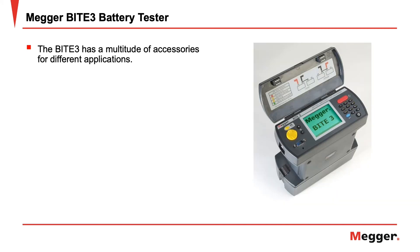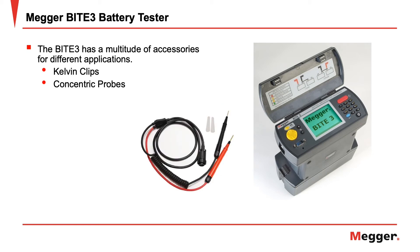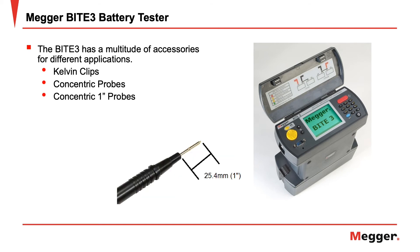The Byte 3 also has a multitude of accessories for different applications. Kelvin clips allow for simple hands-free testing, ideal for battery strings with terminals that can be easily clipped to. Concentric probes allow for testing of batteries on strings that have protective battery caps — there's no need to remove the caps, simply access the batteries through the access hole. The 25.4 millimeter or one-inch concentric probe allows for measurements of batteries and strings with even the deepest access holes.